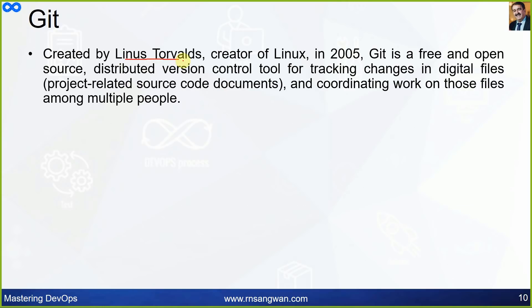Linus Torvalds, creator of Linux, created Linux at age 21 in 1991. In 2005, he created Git — 14 years after Linux. He created only the Linux kernel, not the complete Linux. Linux overall consists of applications, utilities, and programs — all open source. So credit should not be given only to Linus Torvalds.